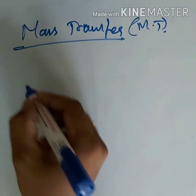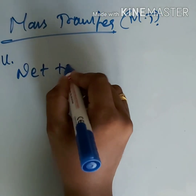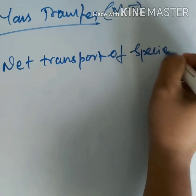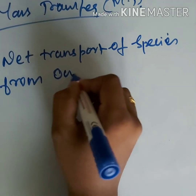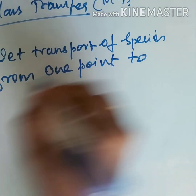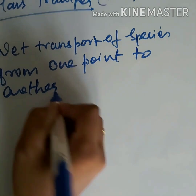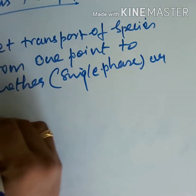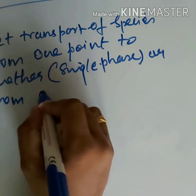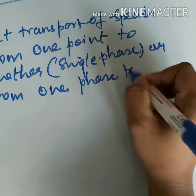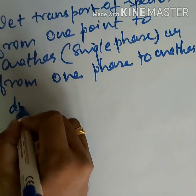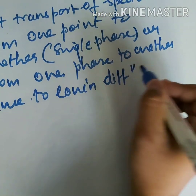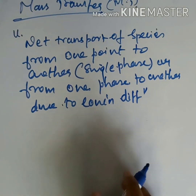The definition of mass transfer is: the net transport of a species from one point to another in a single phase, or from one phase to another, due to a concentration difference. This is the definition of mass transfer.